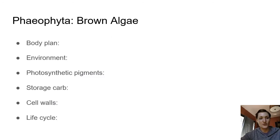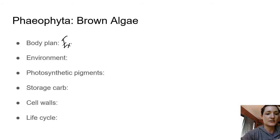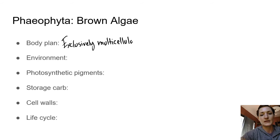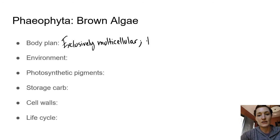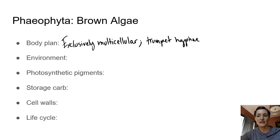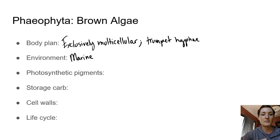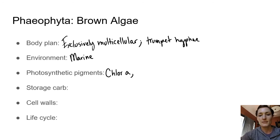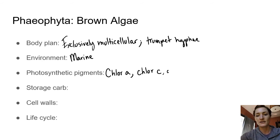Brown algae, unlike red and green algae, are going to be exclusively multicellular. Some of them grow so large that they need conducting tissues, just like plants do — in some we'll see trumpet hyphae, which are basically analogous to sieve cells. The environment is marine. For photosynthetic pigments, they have chlorophyll a from the original cyanobacterial ingestion, but now chlorophyll c instead of the chlorophyll b seen in green algae.